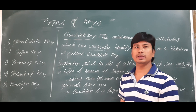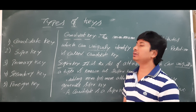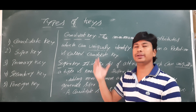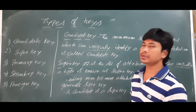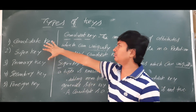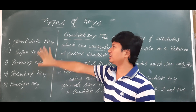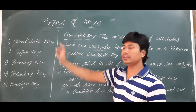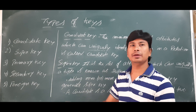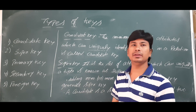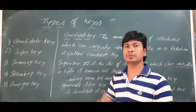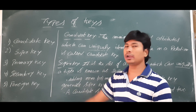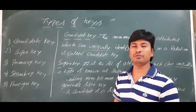Good morning students. In this video we will discuss different types of keys possible in DBMS. We usually find these five types of keys in DBMS: candidate key, super key, primary key, secondary key (sometimes called alternative key), and finally the foreign key.